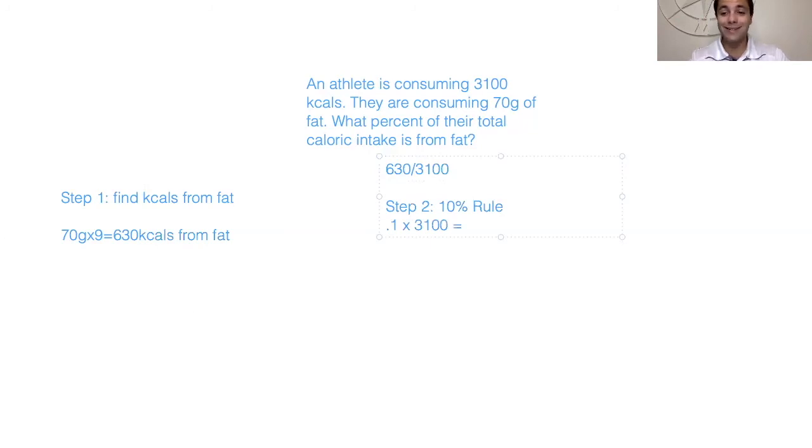So again I'm going to use my 10% rule. So 10 times 3100 would equal, if I just take away that last zero, that's going to be 310. 310 kcals represents 10 percent of the total kcals consumed. So now what I'm going to do is that I'm going to do multiples of 310 to get as close as I can to 630.